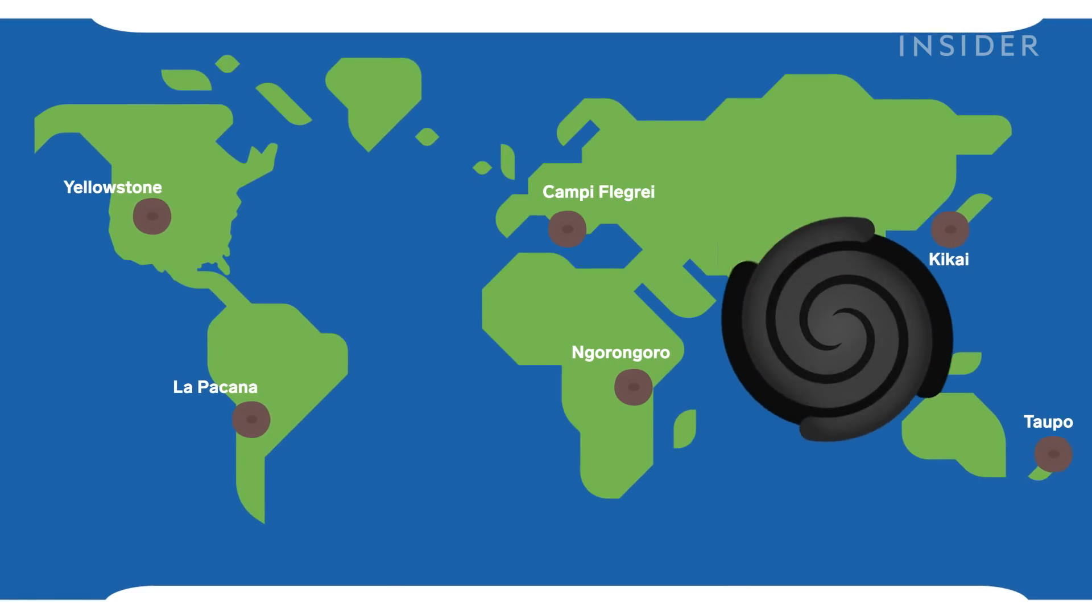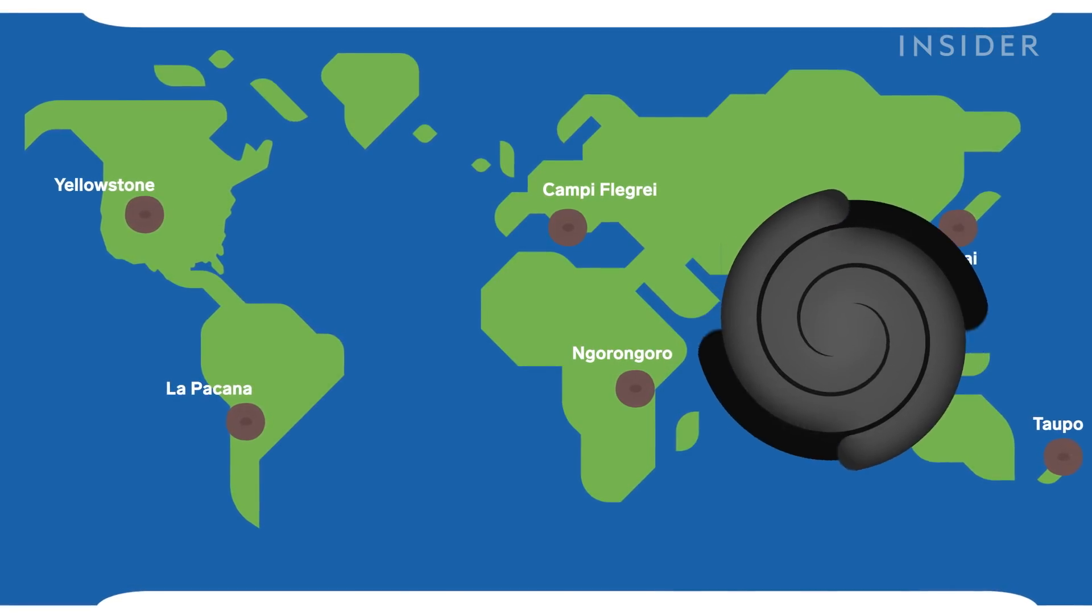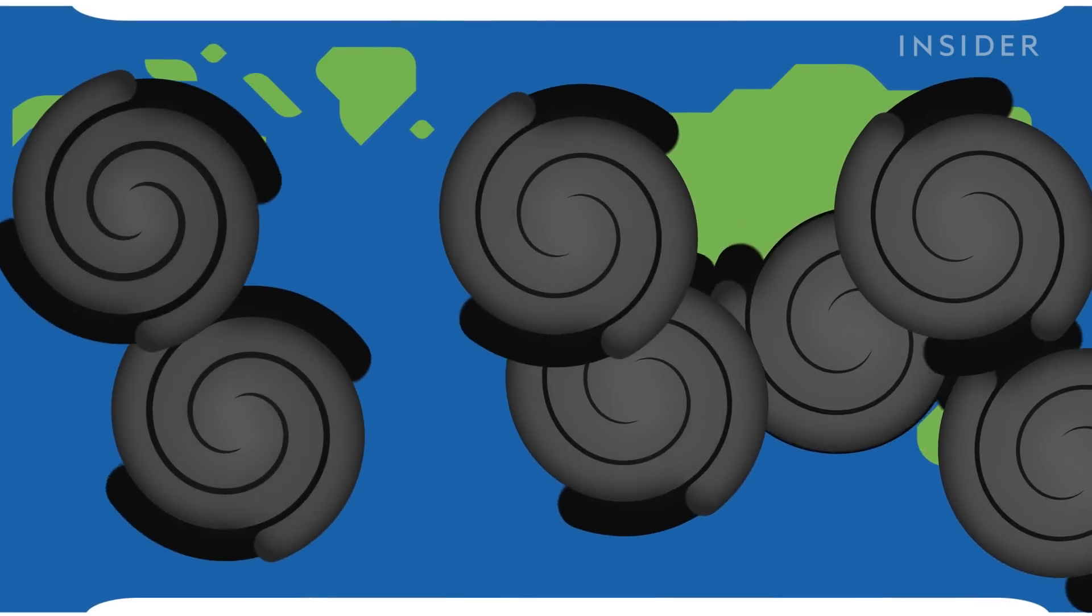When Toba erupted 74,000 years ago, winds blew ash all the way to India. So if all the supervolcanoes go off at once, volcanic debris would spread across the globe.